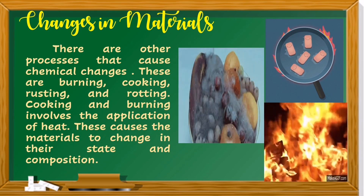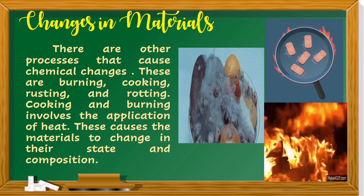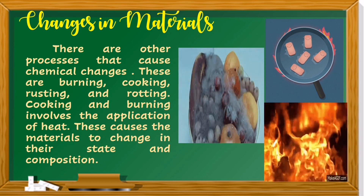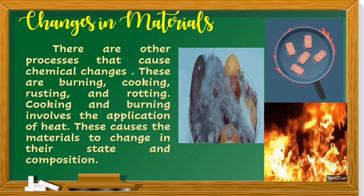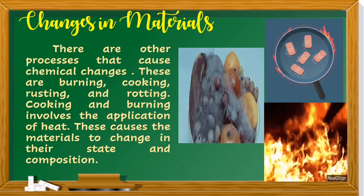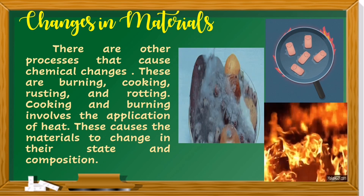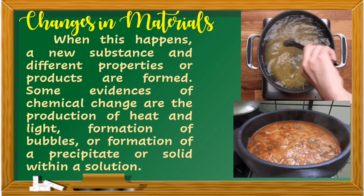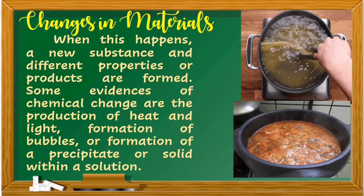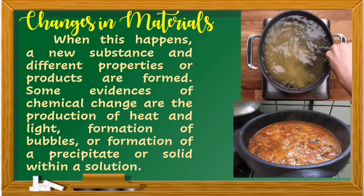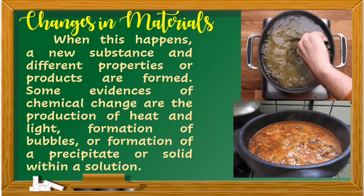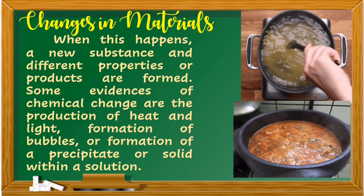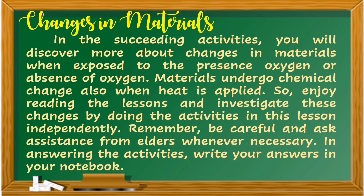There are other processes that cause chemical changes. These are burning, cooking, rusting, and rotting. Cooking and burning involve the application of heat. This causes materials to change in their state and composition. When this happens, a new substance with different properties is formed. Some evidences of chemical change are the production of heat and light, formation of bubbles, or formation of a precipitate or solid within a solution. In the succeeding activities, you will discover more about changes in materials when exposed to the presence or absence of oxygen.